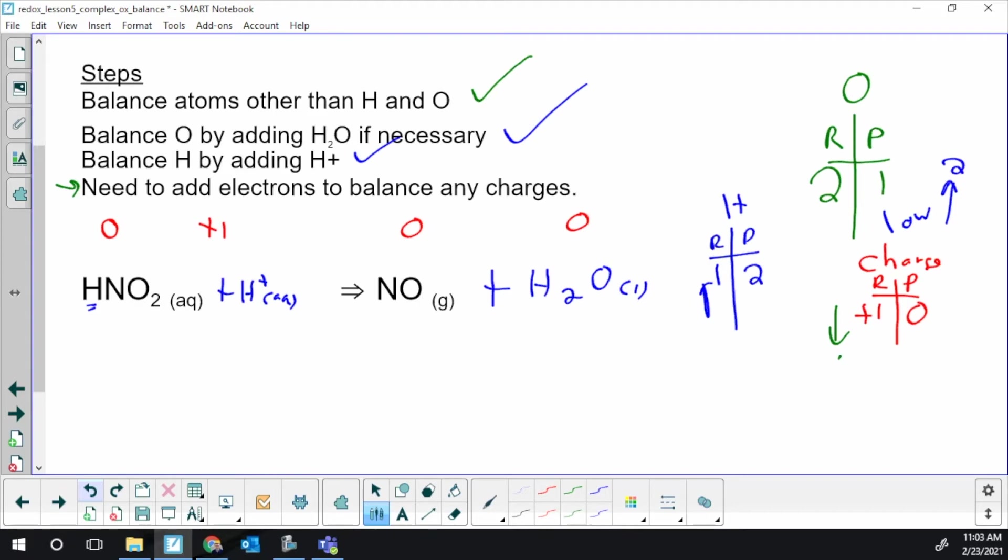So we're going to bring the +1 down to zero by adding one electron on the reactant side because that's the high side. I have now balanced the charge by adding an electron, and I verified the original question said this was a reduction, and yeah, we add an electron to the reactant side, we gained electrons. This is balanced; this is a balanced complex half-reaction.